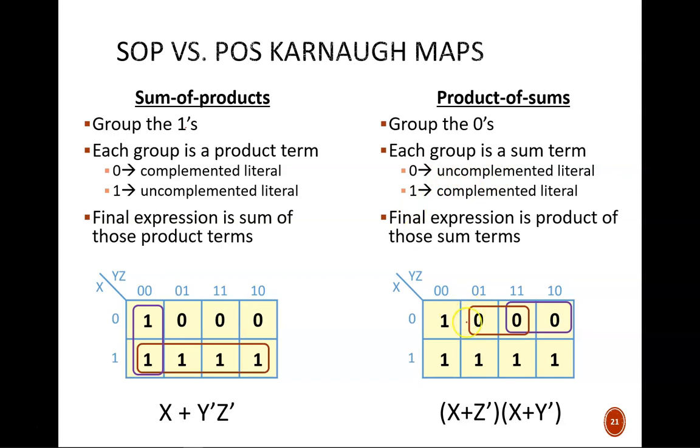Notice here in the middle group that X is always zero, so the sum term includes X. And Z is always one, so the sum term includes Z'. Once we obtain the sum terms, then we AND all of them together to make the final simplified equation. This side-by-side comparison makes it easy to see how each step of the process is opposite for the two forms.